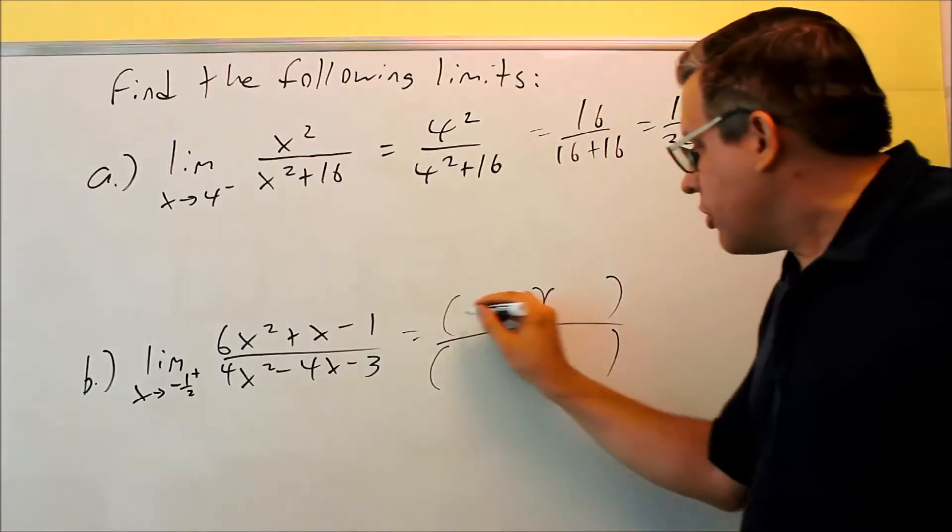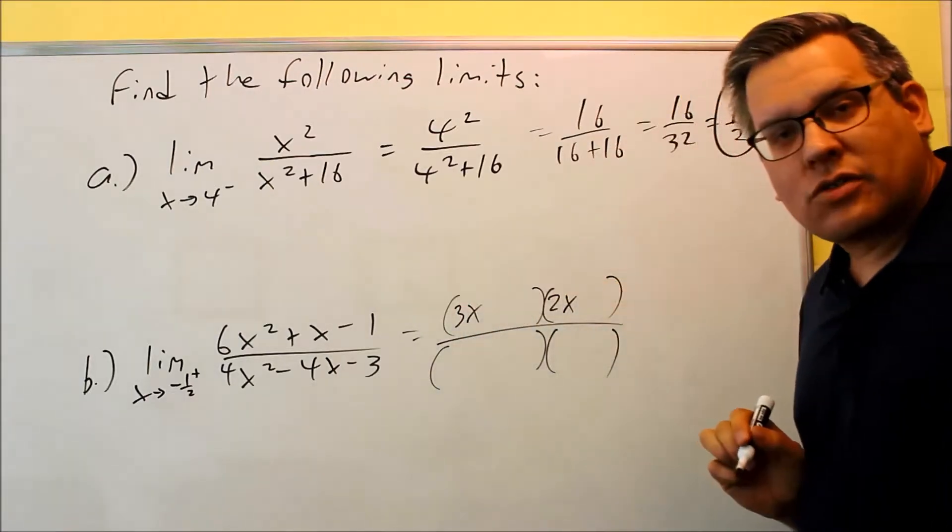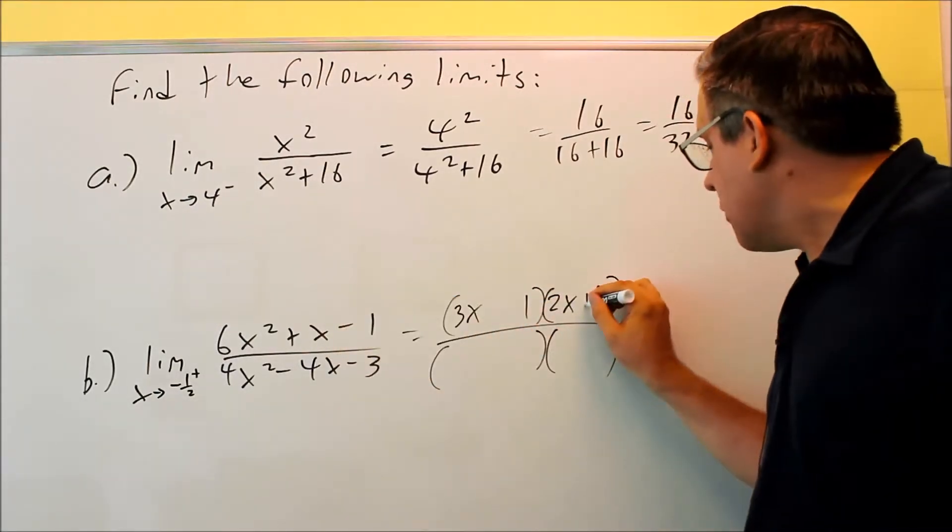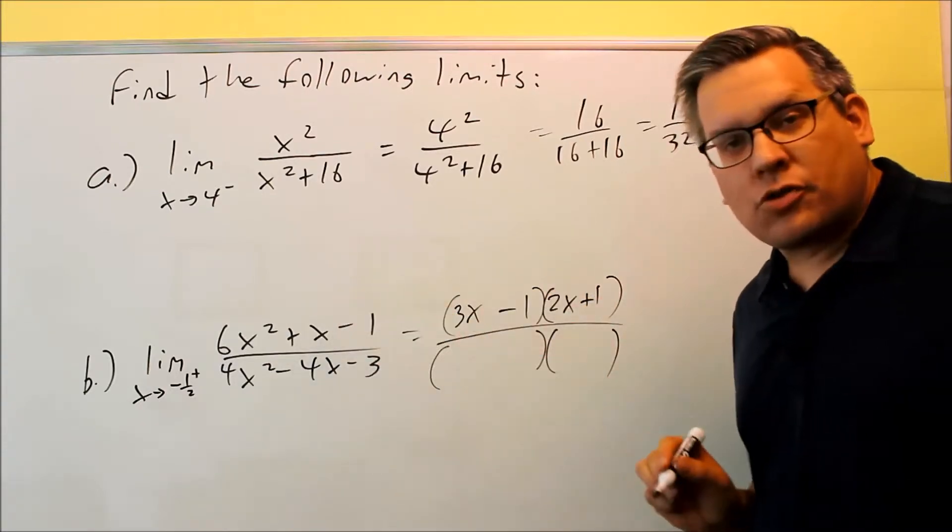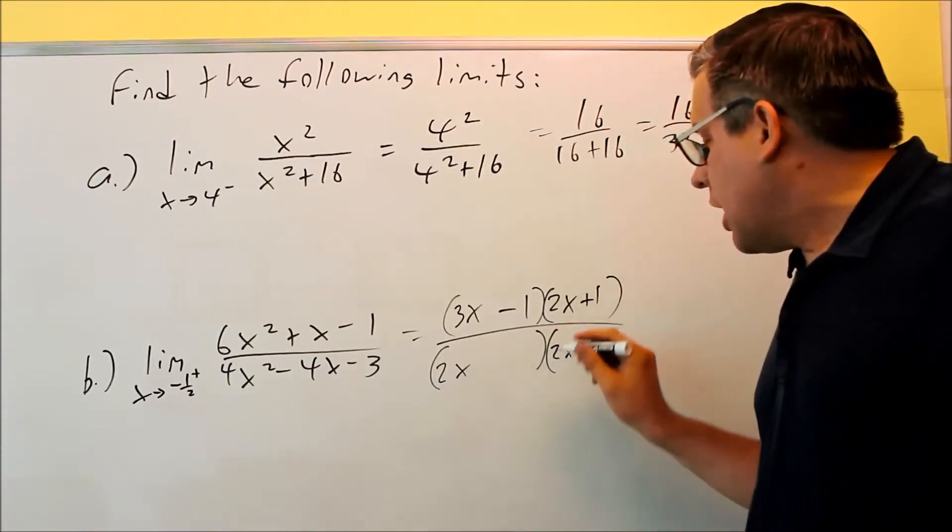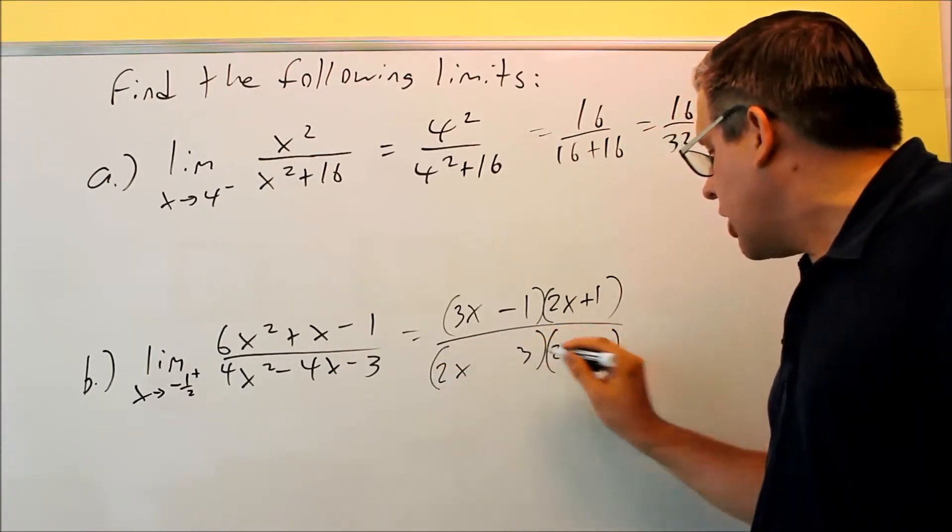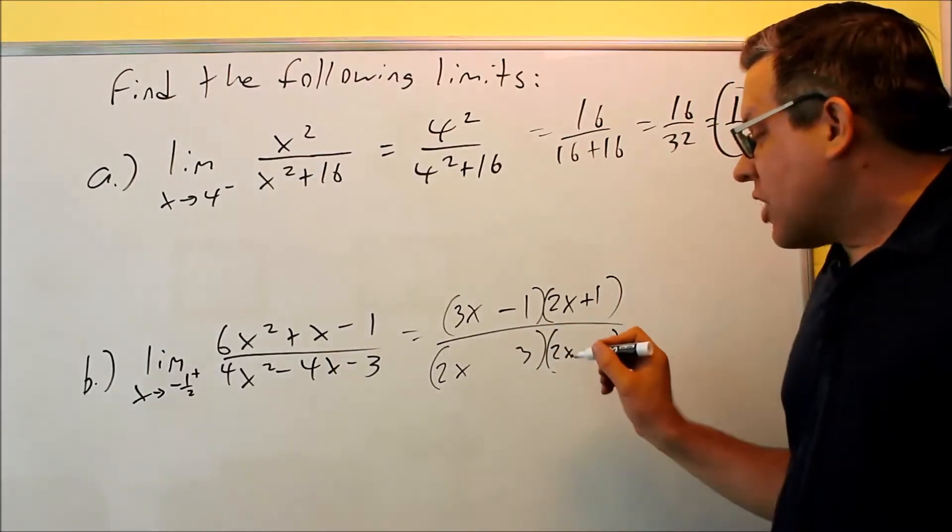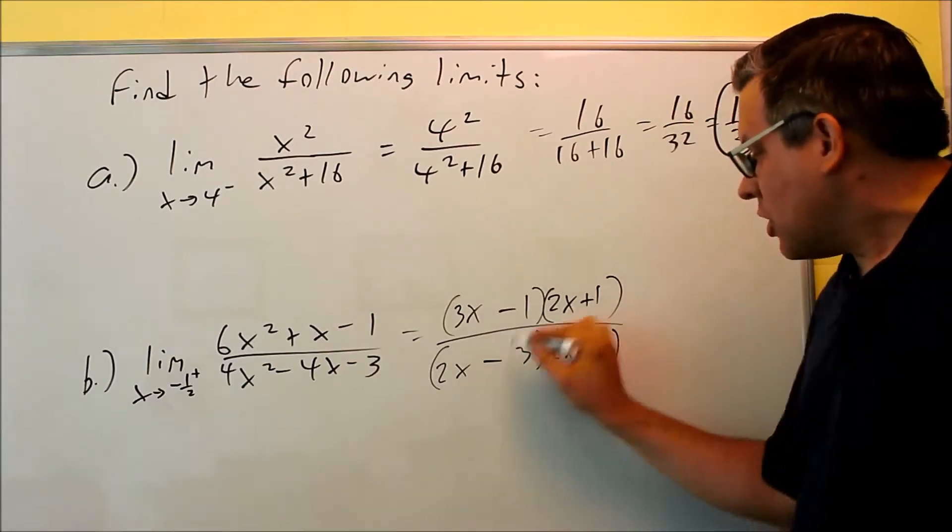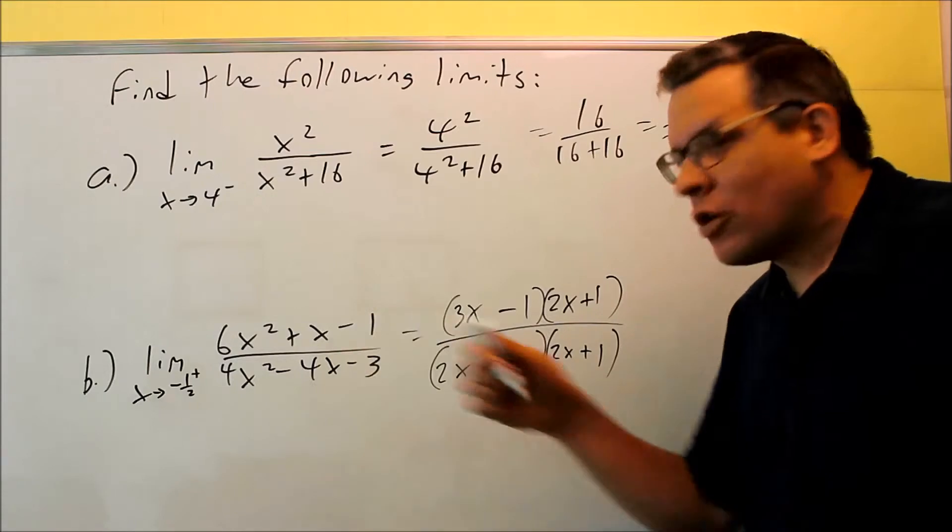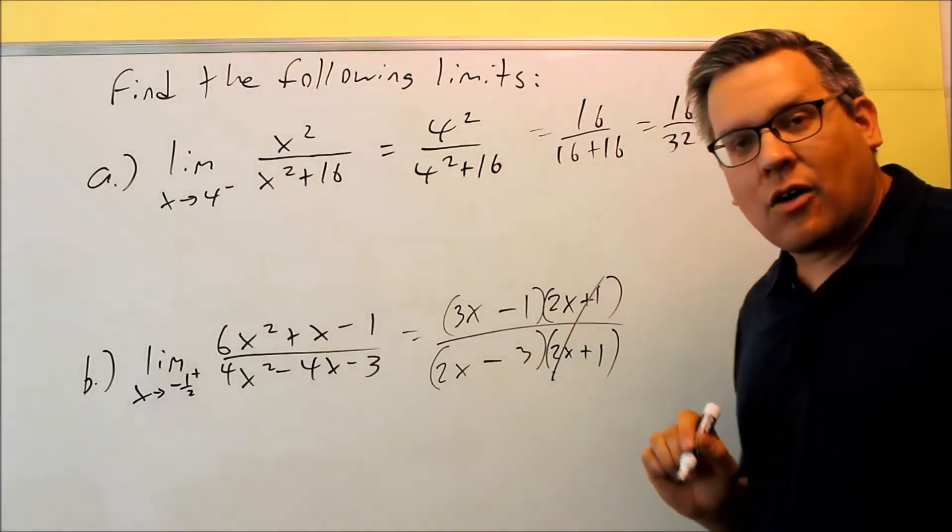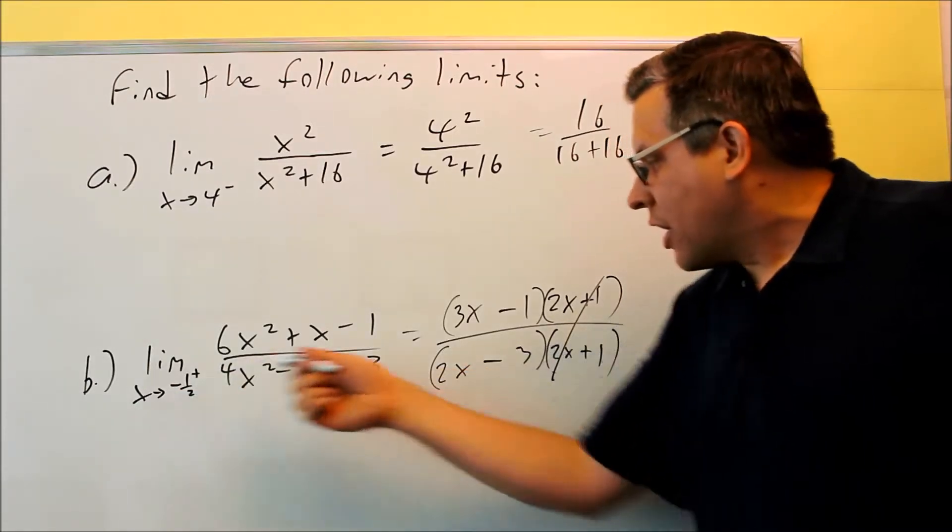So for the top one, we're going to do 3x and 2x, and the 1's on the end. We want the middle number to be a positive, so if I do a plus 1 and a minus, that will give me the correct middle term. Let's factor the bottom one, 2x and 2x, and I'm going to use a 3 and a 1. And the signs on that, I want a negative. That means that this one has to be a minus because this will give me a negative 6, and this will give me a positive 2 added together will give me a negative 4. What I notice about this fraction is I can cancel those out, which means that if I plug in negative 1 half, I don't have division by zero happening anymore.